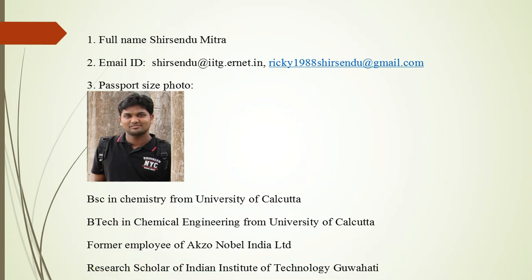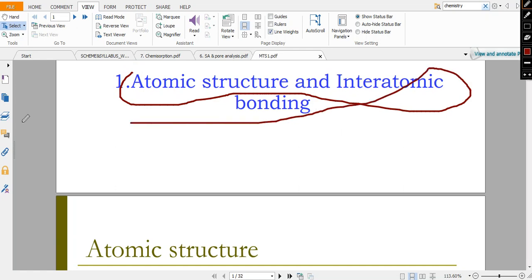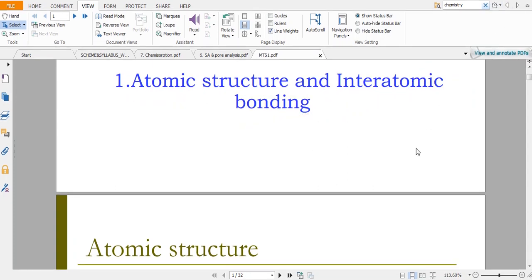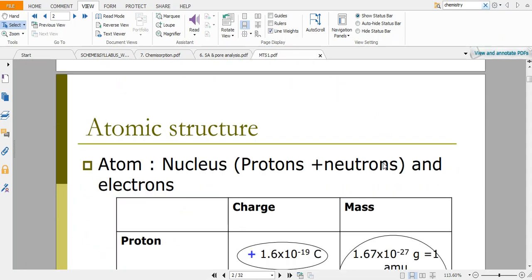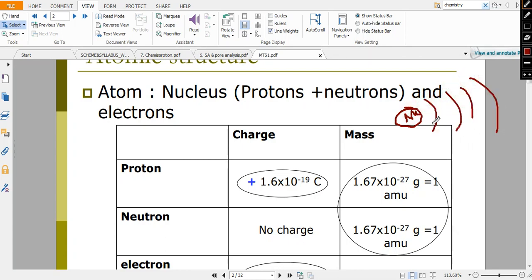Let us proceed with our topic. Today's topic is atomic structure and interatomic bonding. Before studying, you should know there are a few subatomic particles inside an atom. An atom consists of a nucleus at the center, and there are shells where electrons rotate. There is a 2n² rule I have already discussed in the previous video by which electrons are filled up.